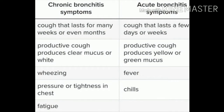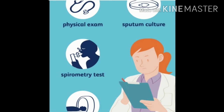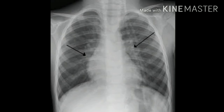Symptoms of acute and chronic bronchitis: In chronic bronchitis, cough lasts for many weeks or even months — a productive cough producing clear or white mucus, wheezing, pressure or tightness in the chest, and fatigue. In acute bronchitis, cough lasts a few days or weeks, productive cough produces yellow or green mucus, fever, and chills. Diagnosis includes physical examination, chest X-ray, sputum examination, pulmonary function test, and ECG.